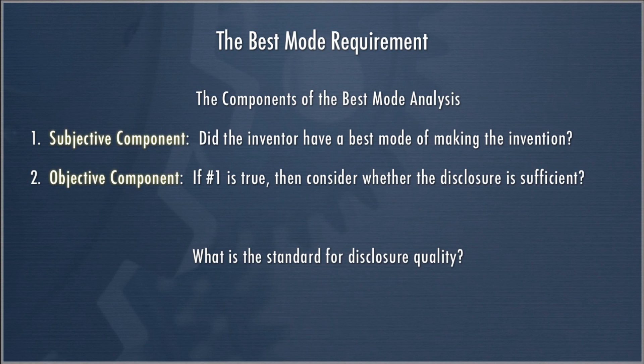The black letter law of the best mode requirement is relatively straightforward — it is a two-component requirement. The first is a subjective component: did the inventor have a best mode of making the invention? If yes, the second question is whether the disclosure is sufficient to describe that best mode. The standard for disclosure quality is the same as we've heard before: would a person of ordinary skill in the art, through the disclosure, understand the inventor's best mode? So it has a subjective component first — did the inventor have a best mode — and then an objective component: is that best mode disclosed sufficiently for a person of skill in the art to understand it?